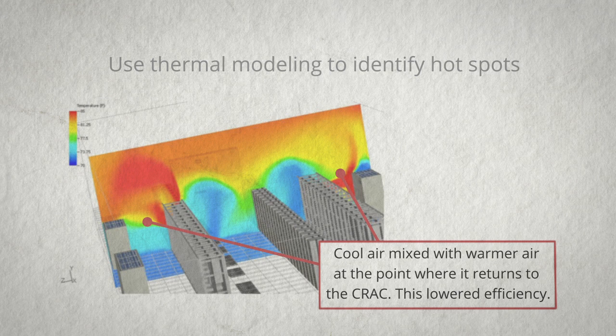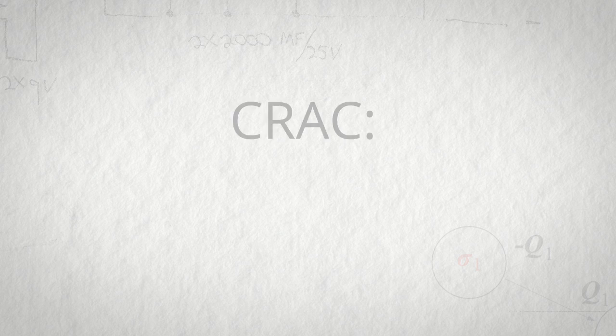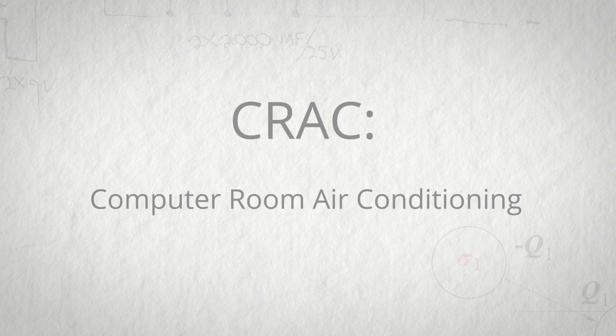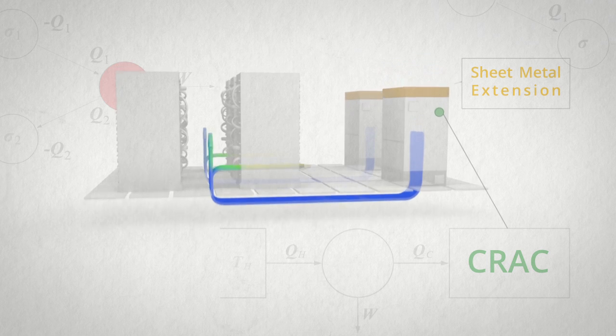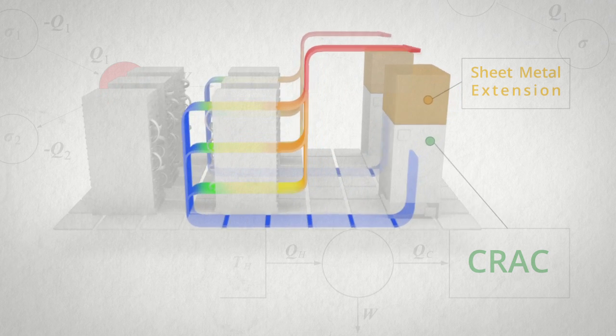For example, in one of our computing and networking rooms, we call them CNRs, we actually did some thermal modeling to see exactly what air flow was doing. Through that modeling, we realized that the intake to our CRACs was too low and that by simply piecing together some sheet metal, we could create extensions that would dramatically increase the air flow quality into the CRACs.